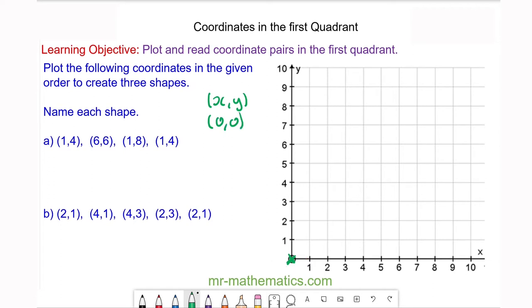We're going to plot these four coordinates and join them together to make a shape. The first coordinate is (1,4). This is when the value of x is 1 and the value along the y-axis is 4.